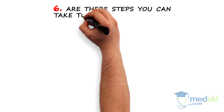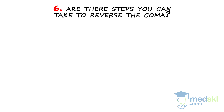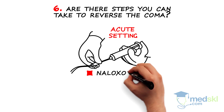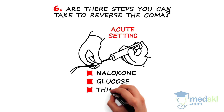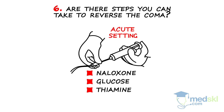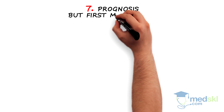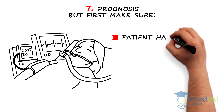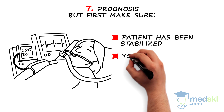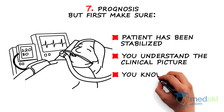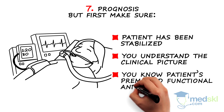Are there steps you can take to reverse the state of coma? This will depend on the etiology. In the acute setting, naloxone, glucose, and thiamine are sometimes given. While you may be thinking about prognosis, do not rush to judgment until the patient has been stabilized, until you understand the clinical picture and you know the patient's premorbid functional and medical status.